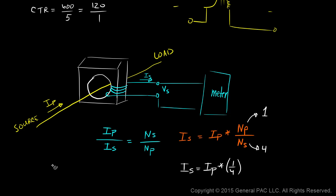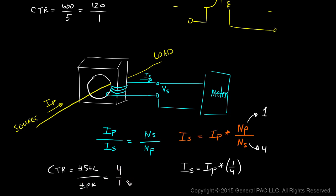Our CTR equals the number of secondary turns divided by the number of primary turns, which is 4 over 1. So in this particular example, our CTR is 4 — very simple.